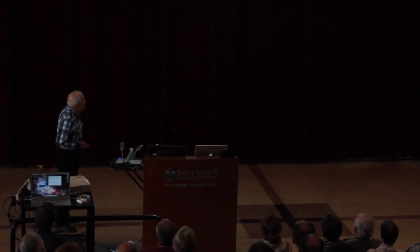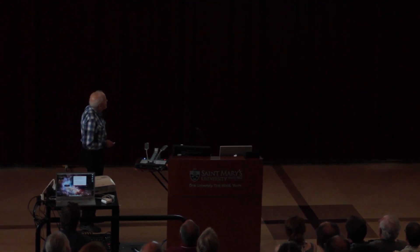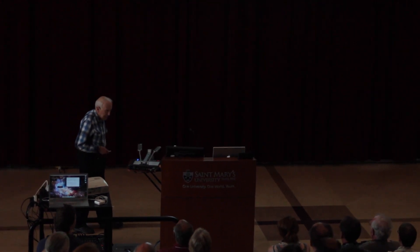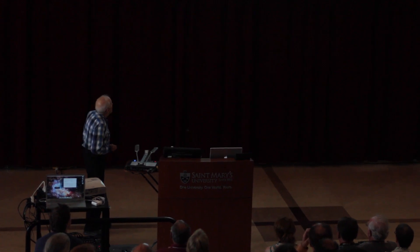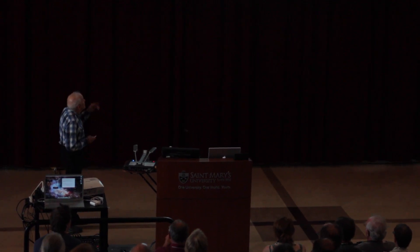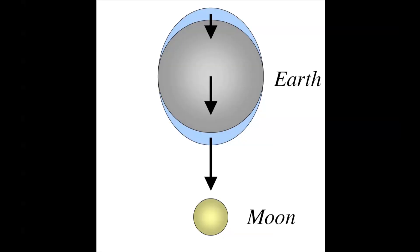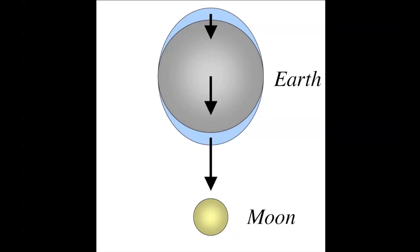First, a basic introduction. The moon is the prime cause of the tides on our planet. The sun also contributes, but here is a picture showing the reason how the moon creates two tidal bulges.